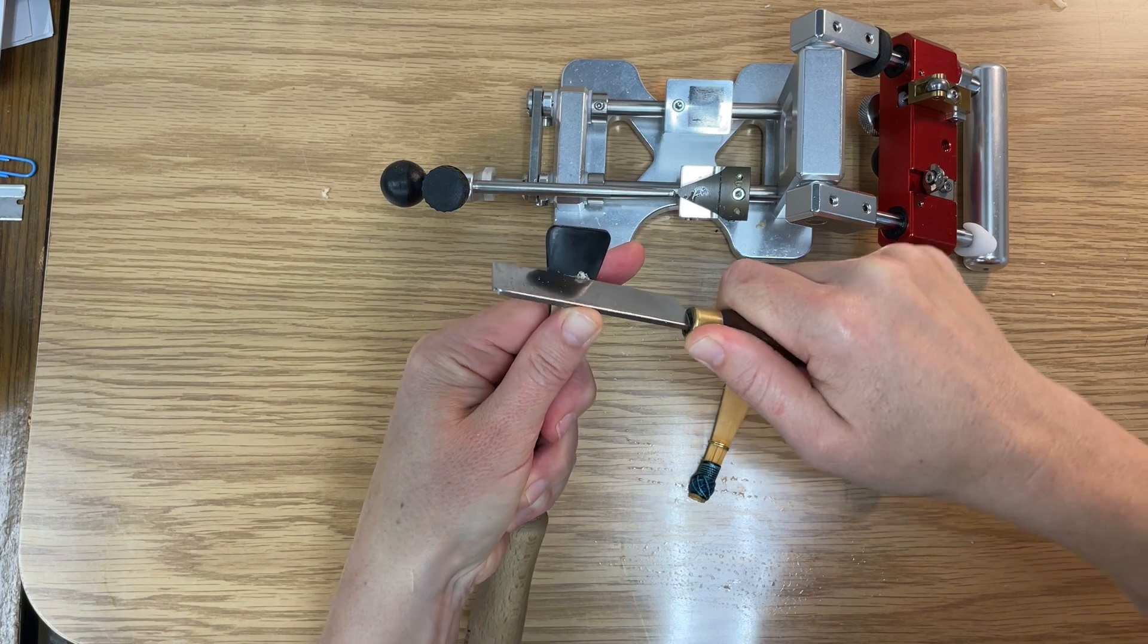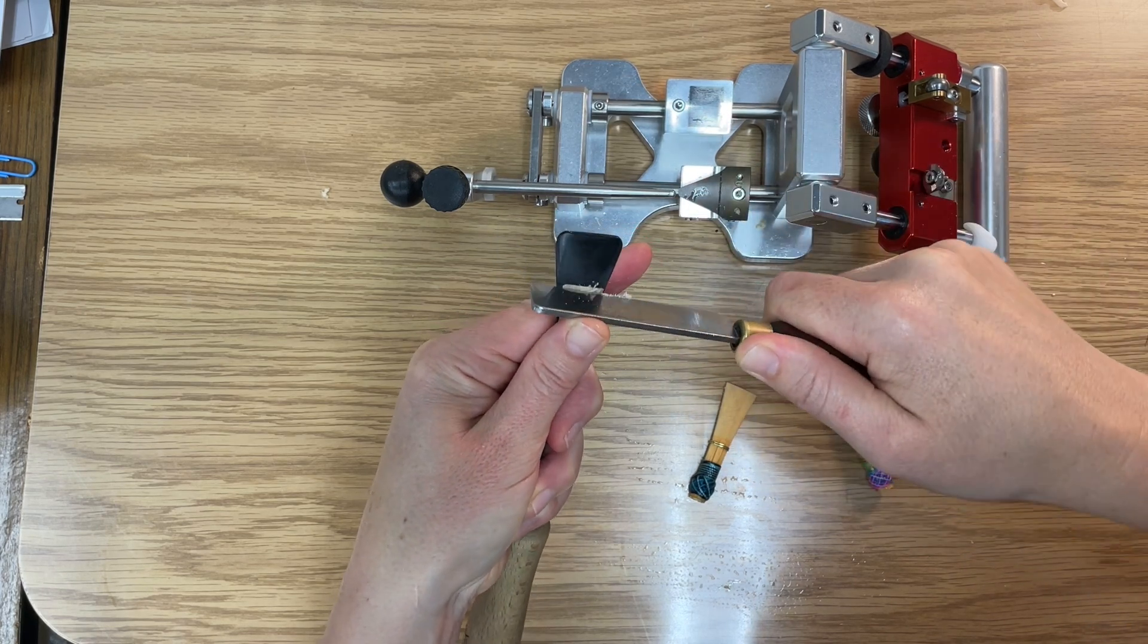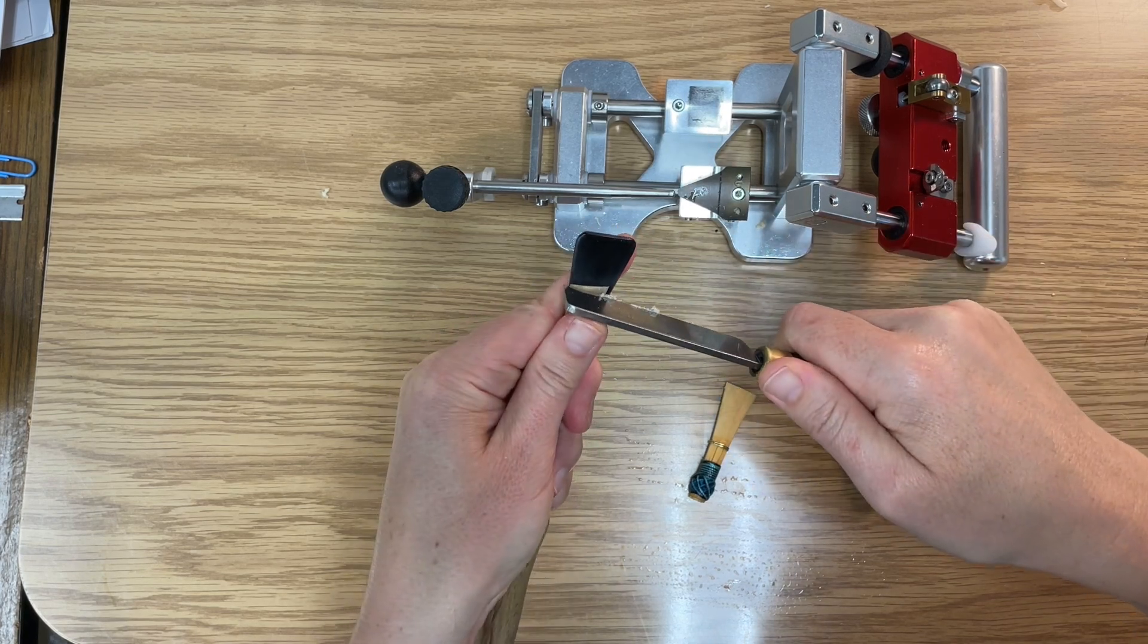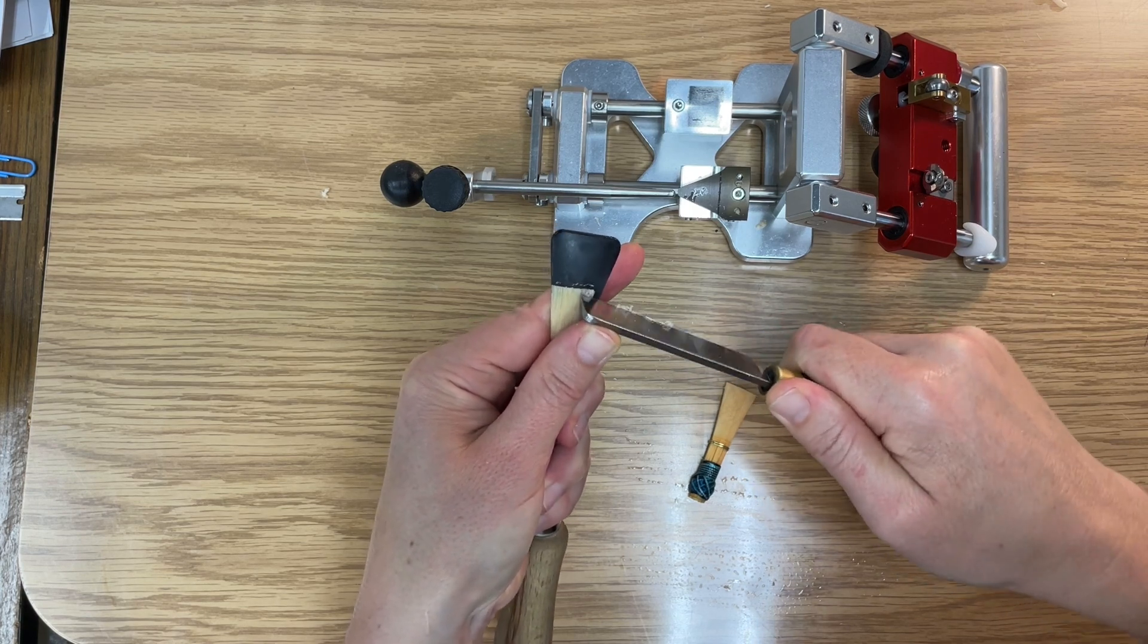Because the tip profiler doesn't quite finish the very tip completely. You'll notice I'm just doing like the front millimeter, half a millimeter.